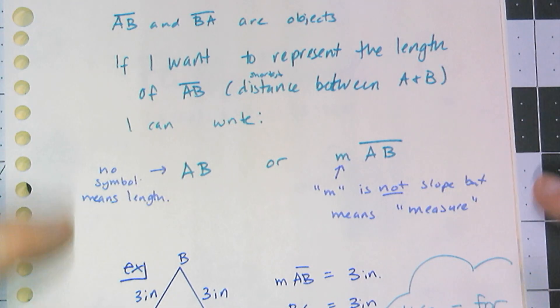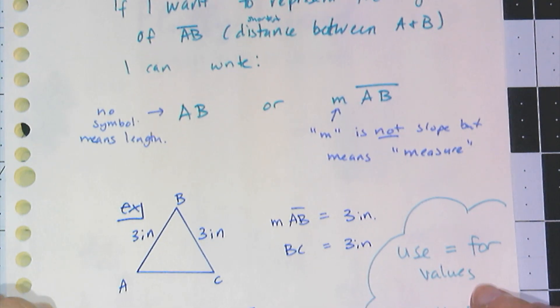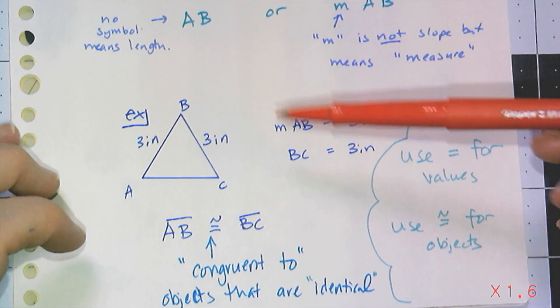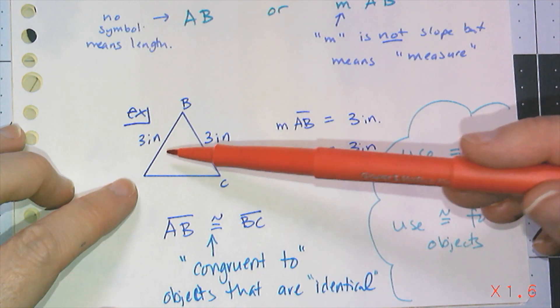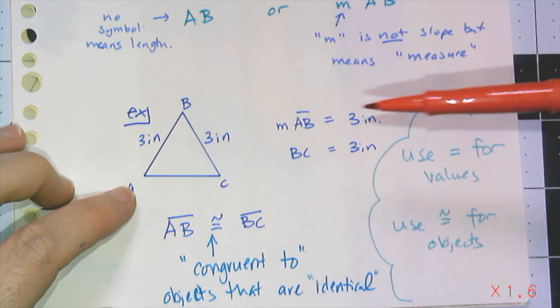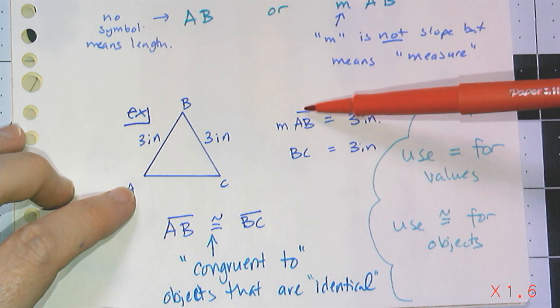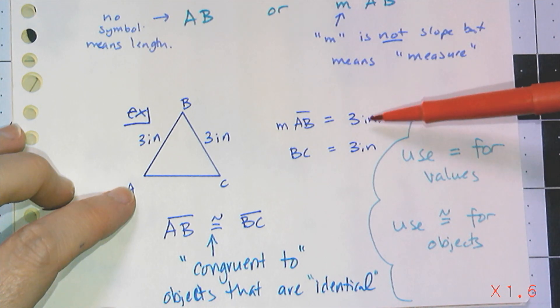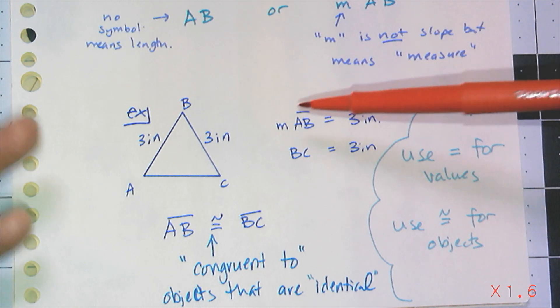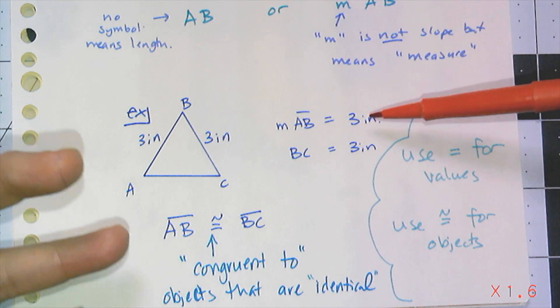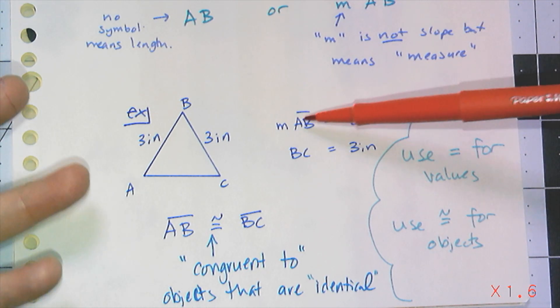Here's an example of a triangle where two sides are both three inches long. I can say the measure of AB equals three inches. I can use the symbol of equal because I have two values. This is a measure and that's a measure. Numbers are values, they can equal each other.